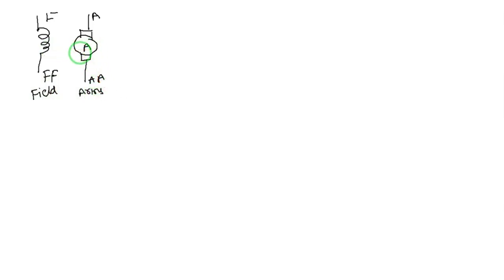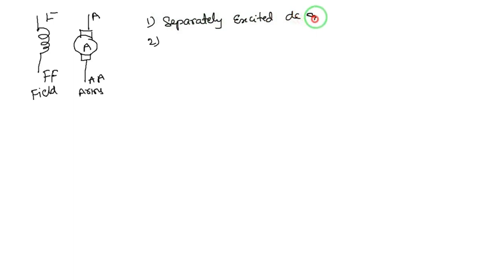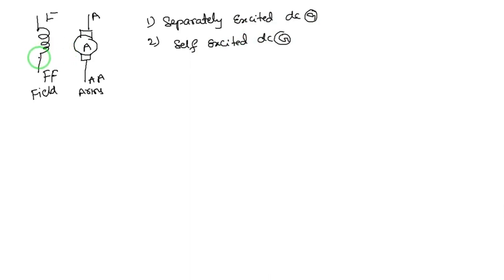By the connection of these two windings we can divide generators into two types: separately excited DC generator and self-excited DC generator. Excitation means the energy or source provided to the field winding. The source is applied to the field winding to produce flux, and by giving the source to the field winding, current flows through it.